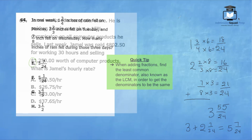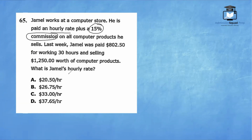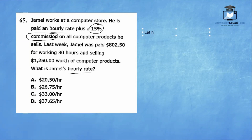For question 65: Jamel works at a computer store. He is paid an hourly rate plus a 15% commission on all computer products he sells. Last week he was paid a total of $802.50 for working 30 hours and selling $1,250 worth of computer products. What is Jamel's hourly rate? We'll call the hourly rate H.